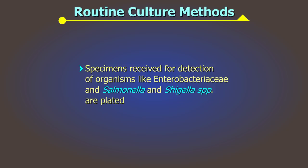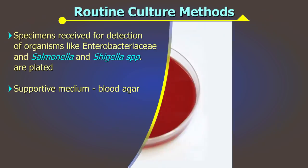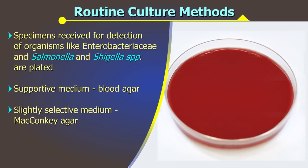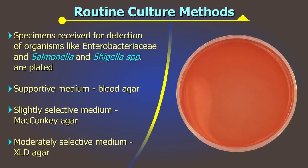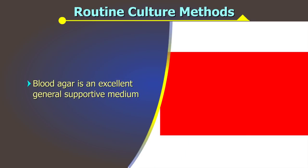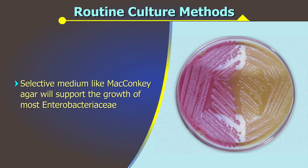Routine Culture Methods. Specimens received for detection of frequently isolated organisms like Enterobacteriaceae, Salmonella, and Shigella species can be plated on a supportive medium like blood agar, a slightly selective medium like MacConkey agar, and a moderately selective medium like XLD agar. Blood agar is an excellent general supportive medium as it allows the growth of yeast species, Staphylococci, and Enterococci. A differential or selective medium like MacConkey agar will support the growth of most Enterobacteriaceae.